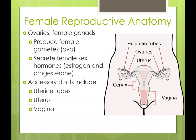We have the ovaries which are going to be our female gonads. Their job is to produce a gamete, which would be an egg or an oocyte or ova, and they also secrete the female sex hormones estrogen and progesterone. We also have some accessory ducts that will include our uterine tubes, also called fallopian tubes or oviducts. We also have the uterus and the vagina.